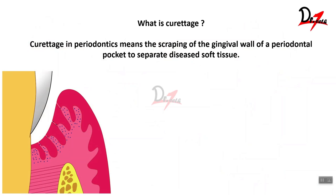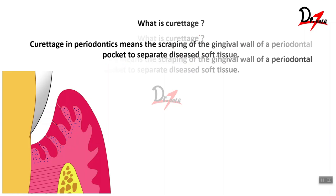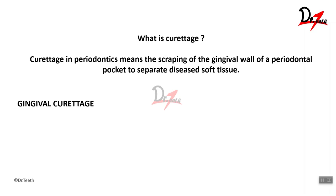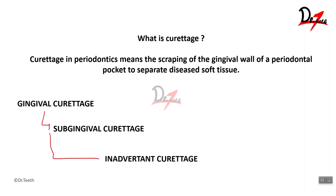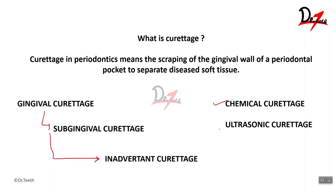So what is gingival curettage? Curettage in periodontics means the scraping of the gingival wall of the periodontal pocket to separate the diseased soft tissue. You scrape the gingival wall and separate the diseased soft tissue — this process is called curettage. We have different techniques: the basic curettage technique, which includes sub-gingival curettage and inadvertent curettage, and the other techniques — chemical curettage and ultrasonic curettage.